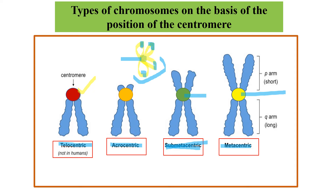In submetacentric chromosomes, the q arm is longer than the p arm. In acrocentric chromosomes, the q arm is even longer compared to the p arm. In telocentric chromosomes, as you can see from the diagram, the centromere is at the telomere end, so there is effectively no p arm.